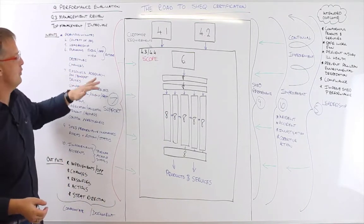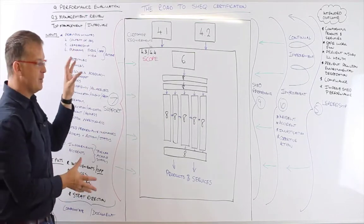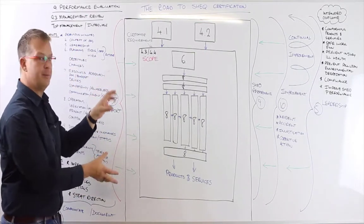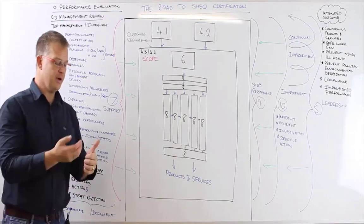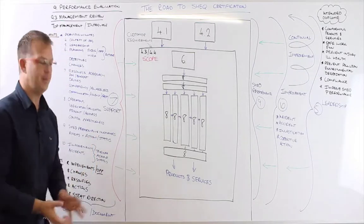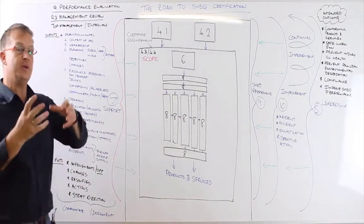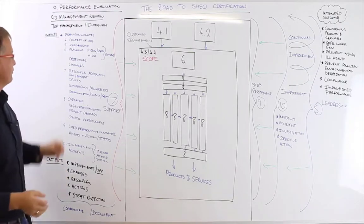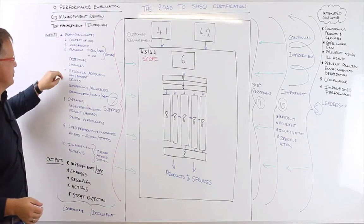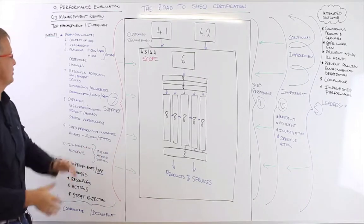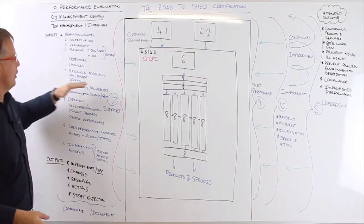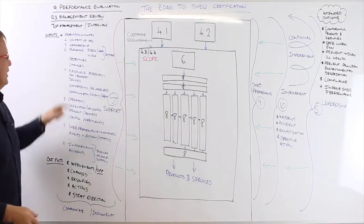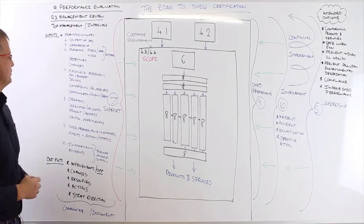In Clause 7, we'd have a look at the resources. We'd have a look at, have we provided skilled and competent people? Are the people aware? What is our performance against our training plan? And if we said we were going to train so many people, have we trained them? We would also have a look at the provision of our resources and our planned maintenance of our plant and equipment and our budget and our monitoring and measuring devices. We'd have a look at competency and awareness, as we've just mentioned.